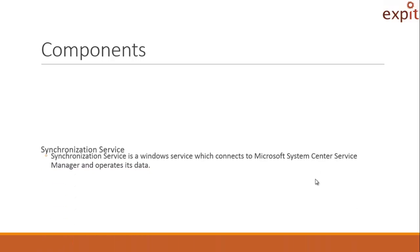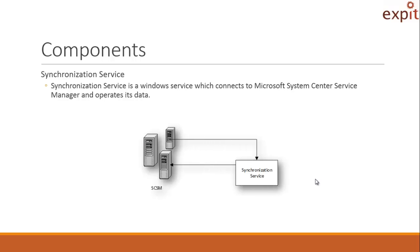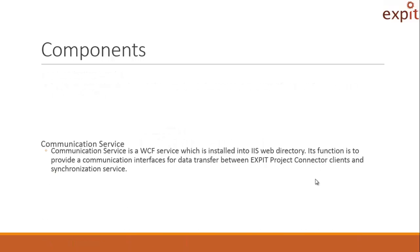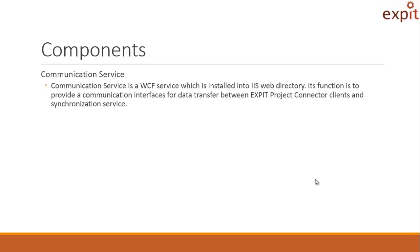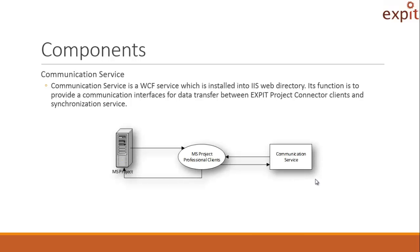The first component is the Synchronization Service, which is a Windows service responsible for the communication and data retrieval between SCSM and EXPET Project Connector. In other words, the Synchronization Service is the link between SCSM and EXPET Project Connector. The second component is the Communication Service, which is a WCF service installed into IIS WebDirectory, responsible for communication between Microsoft Project and EXPET Project Connector clients installed on Microsoft Project.